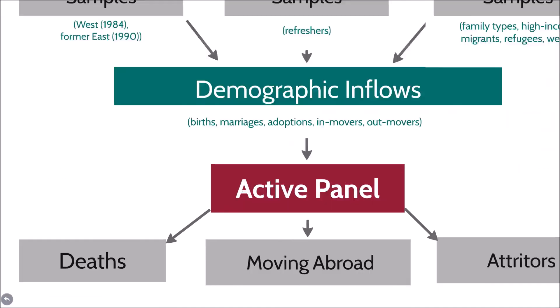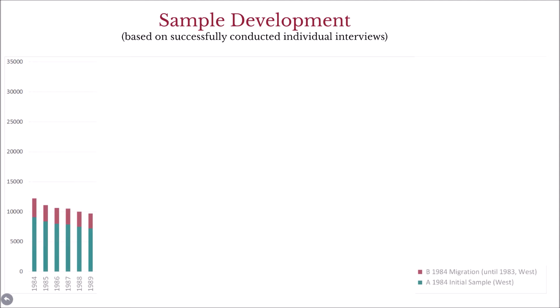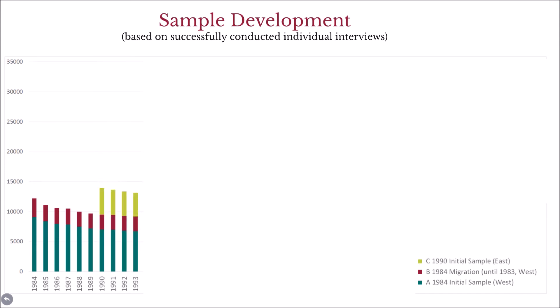Let's now have a brief look at the types of samples which have been added over the years. Here you can see the development of various sub-samples at the level of adult household members. The first wave contained two samples: the initial sample for Western Germany and a migrant sample containing foreign workers. In 1990, a sample for Eastern Germany was added. The initial wave of this sample had the highest response rate in the SUP's history.